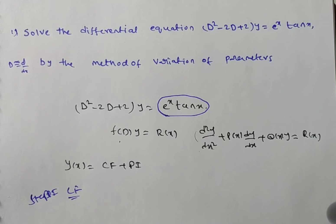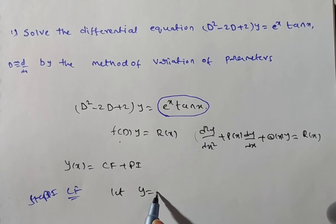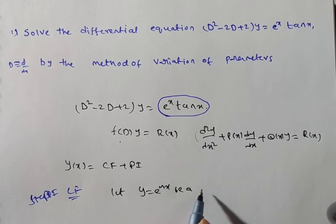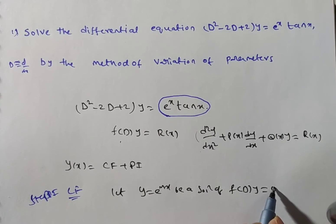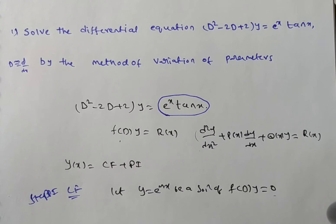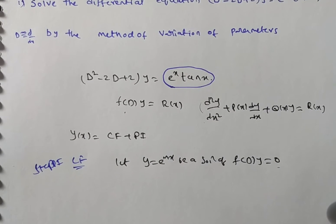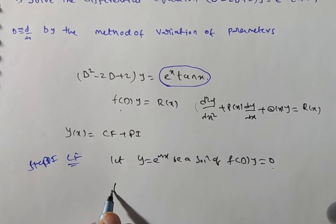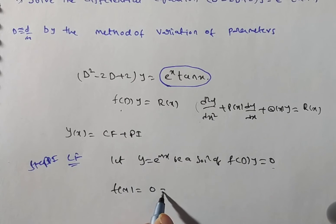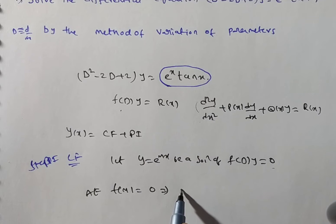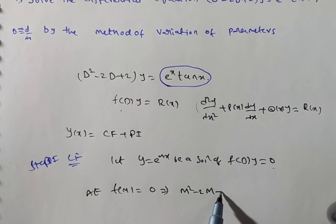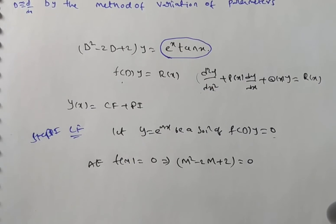Step 1: Find the complementary function. To find it, we set R(x) = 0. Let y = e^(mx) be a solution of f(D)·y = 0. This gives the auxiliary equation f(m) = 0, that is m² - 2m + 2 = 0.